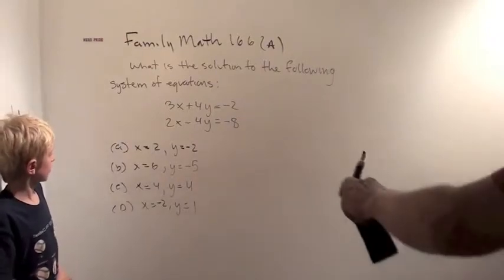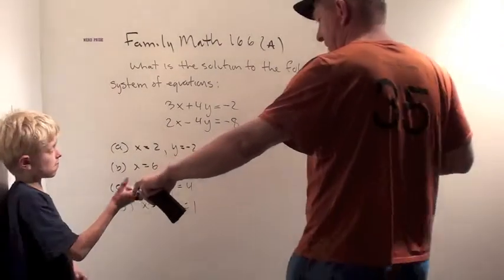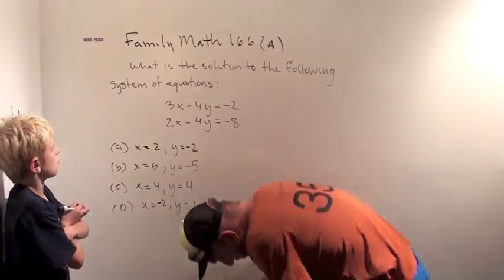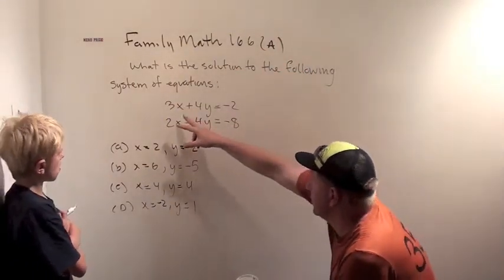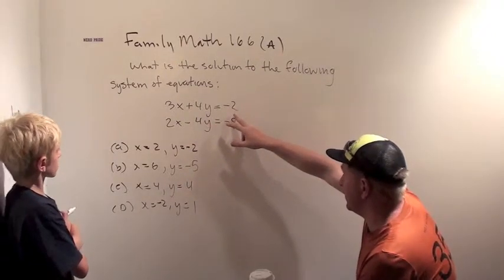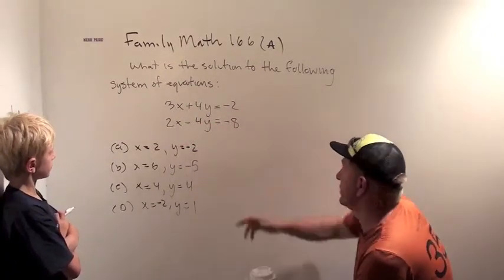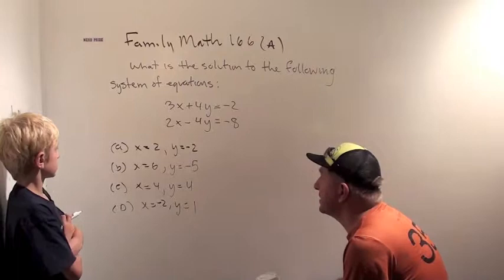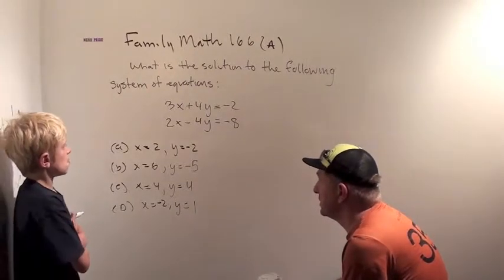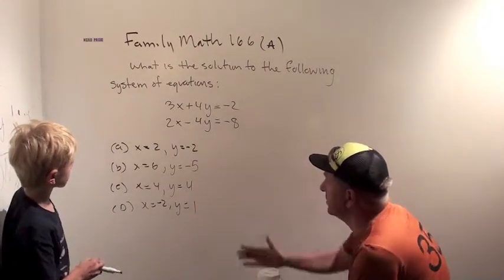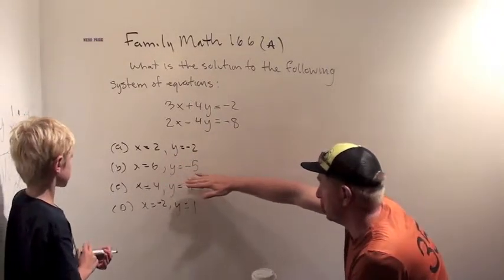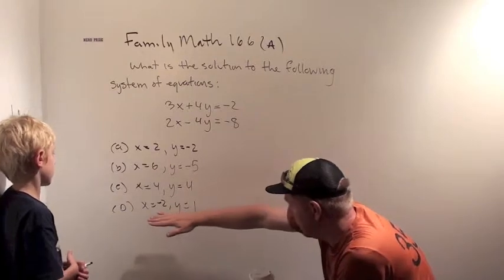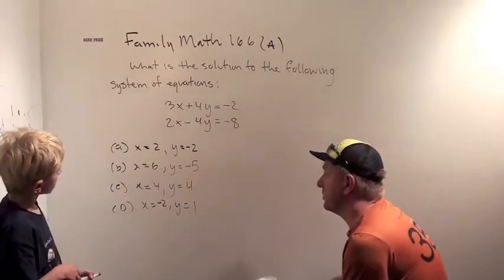Okay, so here's the first of the 8th grade problems. What is the solution to the following system of equations? 3x plus 4y equals minus 2. 2x minus 4y equals minus 8. And then here are your choices. x equals 2, y equals minus 2. x equals 6, y equals minus 5. x equals 4, y equals 4. x equals minus 2, y equals 9.